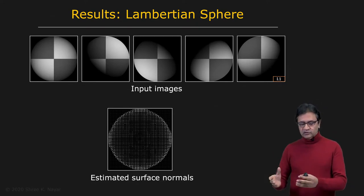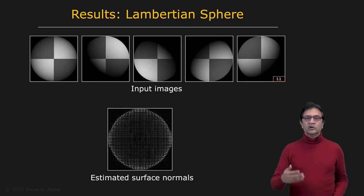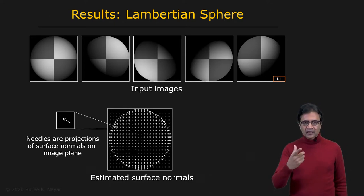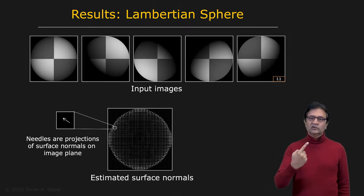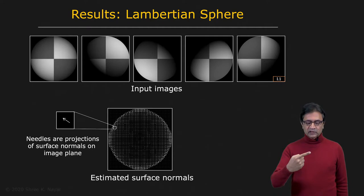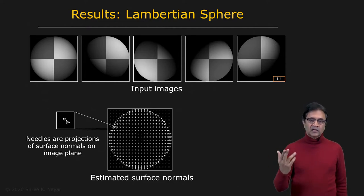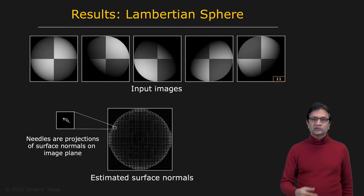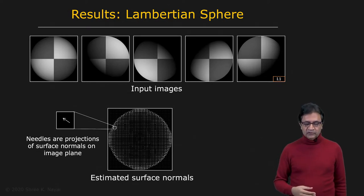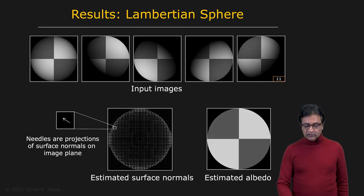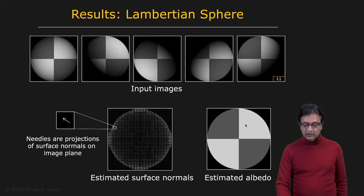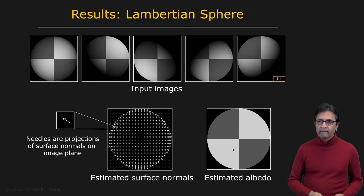The p and q values are used to compute surface normals. The surface normal map is shown here: the length of each vector indicates the tilt of the normal relative to the viewing direction, and the direction of the vector gives the second angle. We can also compute the albedo, which turns out to be exactly what you would expect — even though it's a sphere, the albedo is uniform across the uniformly painted regions.